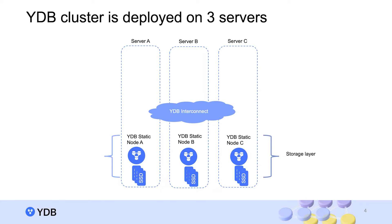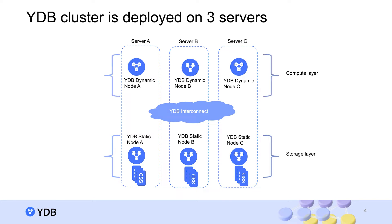The compute layer is separated from the storage layer, and different layers use the interconnect network to communicate with each other. The compute layer is formed by dynamic YDB nodes that are launched on the same servers as storage nodes. Applications access the YDB cluster through dynamic nodes, which receive and handle client requests.